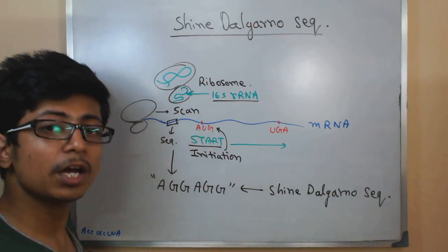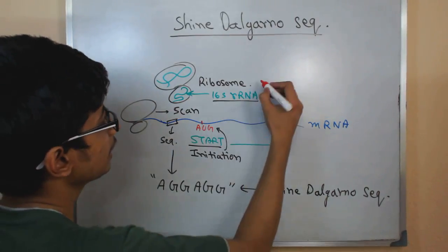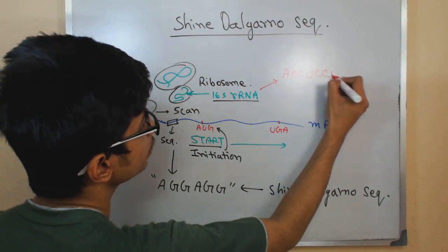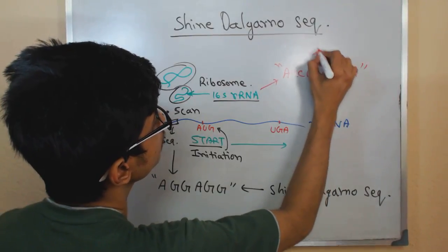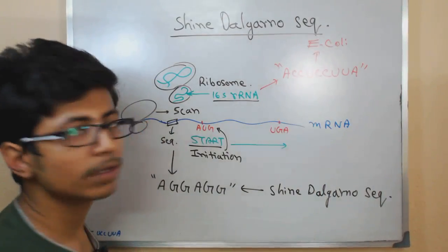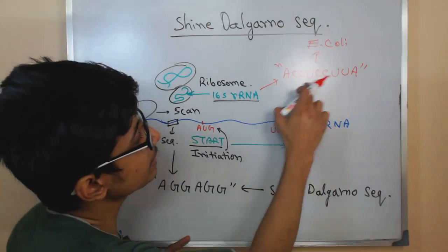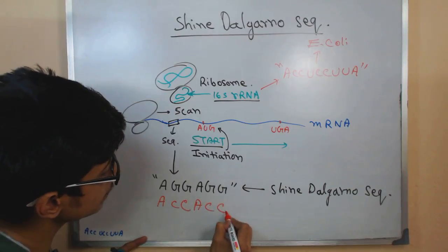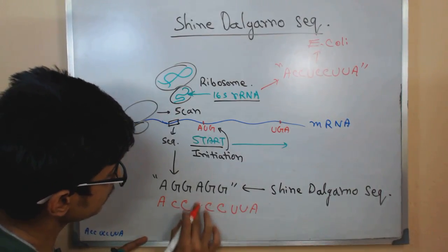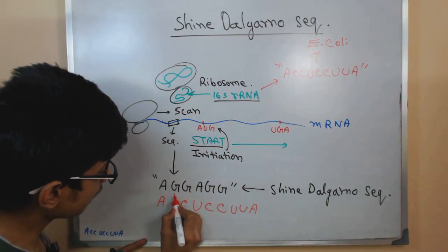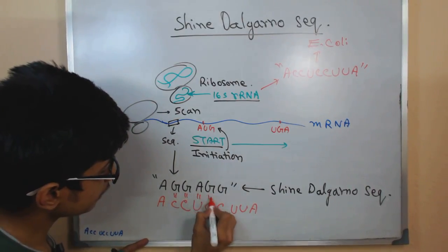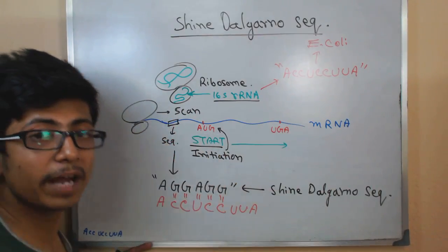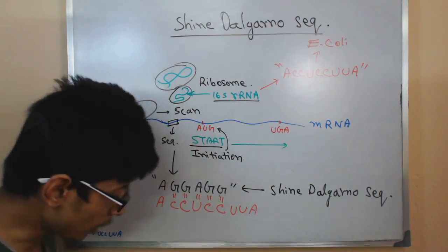And that complementary sequence found in E. coli ribosome is ACCUCCUUA. This is in E. coli. This is a sequence ACCUCCUUA. You can see it will have pairing here. So it can pair with the Shine-Dalgarno sequence if it finds a Shine-Dalgarno sequence in the first place.